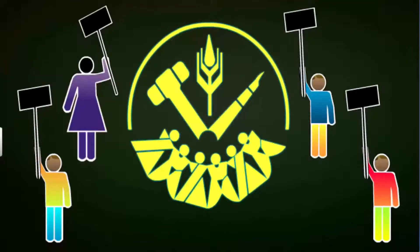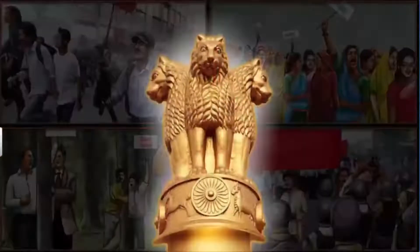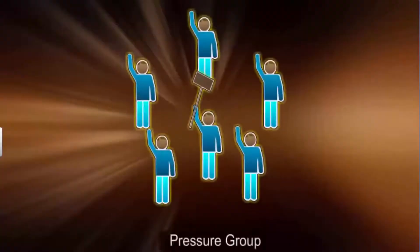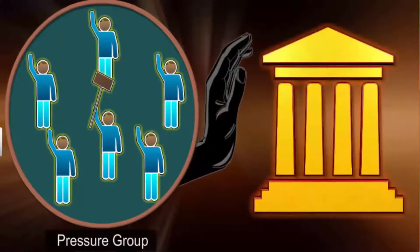Although pressure groups and movement groups influence politics in various ways, it is the responsibility of our government to ensure the interests of all and not just a particular group or section. Pressure groups are organizations which are formed when people with common occupation, interests, aims and opinions get together to achieve a common goal. The pressure groups and movements aim to force the government to agree to their demands, and they employ several tactics to achieve this.